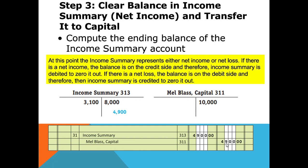Note: if there is a net loss, the balance would be on the debit side of income summary, so you would credit income summary to zero it out and debit capital — which brings capital down. But that's not the case here. We have net income of $4,900, debiting income summary and crediting capital, increasing capital. So again, step three is not set in stone — it depends on whether you have net income or net loss.